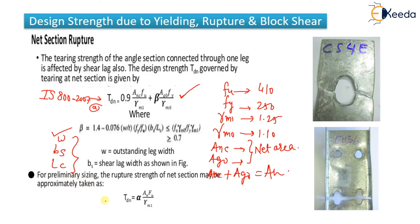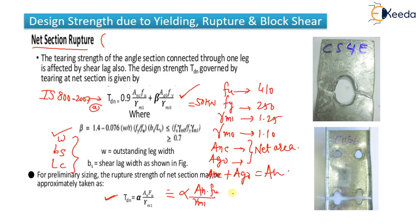The second formula for angles is: Tdn = α × An × fu / γm1, where α can be taken as 0.6, 0.7, or 0.8 depending on the configuration, An is the net area (Anc + Ago), and fu = 410 MPa. The minimum of the two angle formulas is taken as the final net section rupture strength.